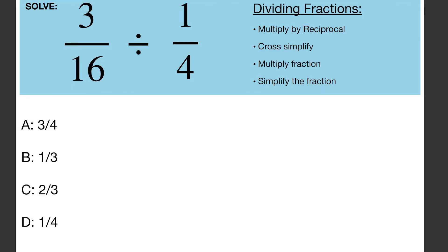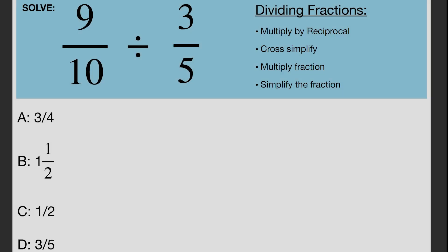3 over 16 divided by 1 over 4. 9 over 10 divided by 3 over 5.